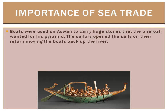The sailors used the water currents — the river currents — while going back to where they came from. When coming down with cargo, they took the help of the prevailing winds, which are the winds constantly blowing across the earth. The river currents flow from south to north, whereas the prevailing winds blow from north to south.